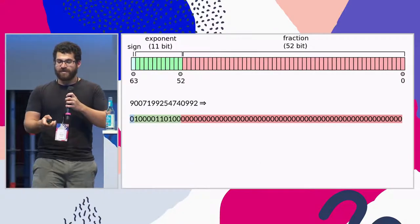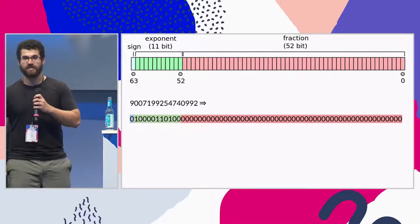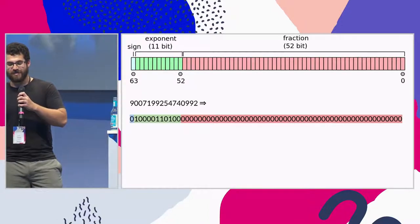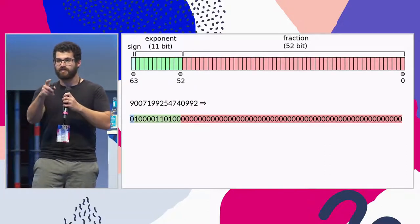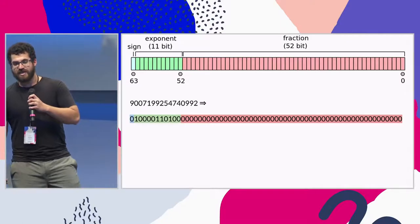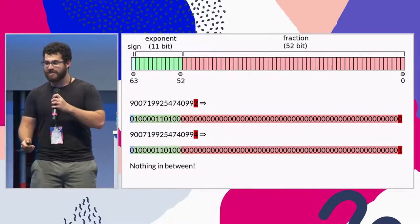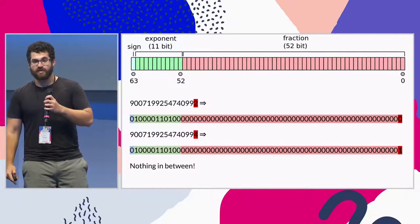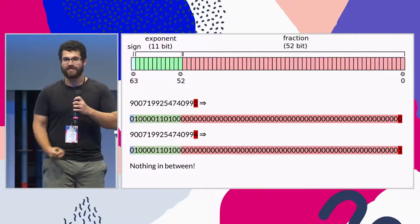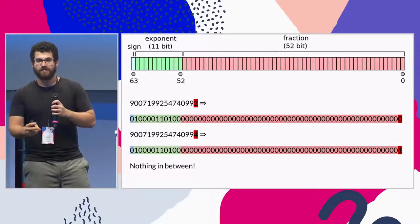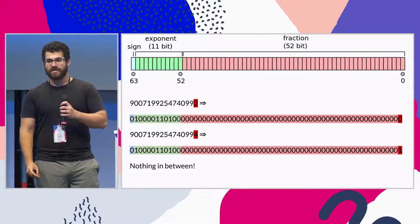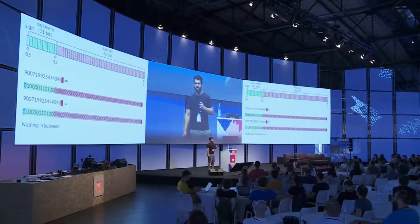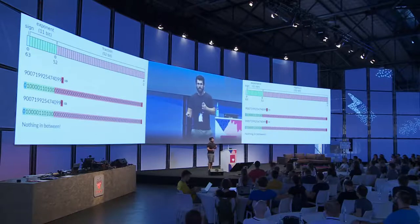Our friend 2 to the 53rd power looks like this when you put it in a floating point. The sign is 0 to represent positive 1. The exponent is that number starting with a 1, and the fraction is all 0s. It has an implicit sort of 1 point before the 0s. The next biggest number is actually that ending with a 4. There's actually no numbers in between. If we're representing something in 64 bits, there's only 2 to the 64 different bit patterns, so we can't represent every single integer. At some point we have to round, go up to infinity, or have an error.